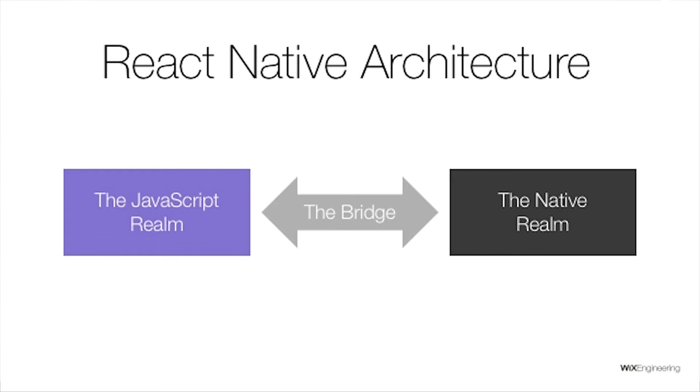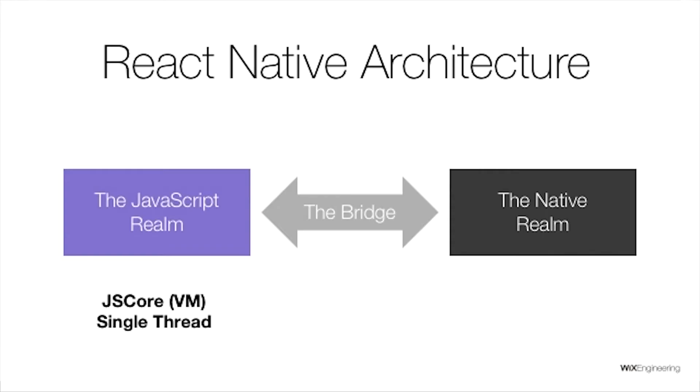Let's dive into how React Native is architected. The main thing to understand is that React Native is separated into two different realms. One realm is the JavaScript realm — that's where you develop most of your business code. The other realm is the native realm — that's where all the native code runs. In iOS, for example, all the native threads are running in your app. Your JavaScript code runs on a single thread inside something called JavaScriptCore — a JavaScript engine, similar to what a browser has. In the native realm you have one UI thread and many background threads. The thing connecting the two is the React Native bridge.